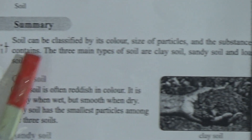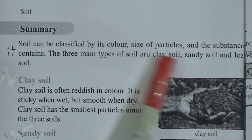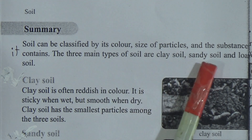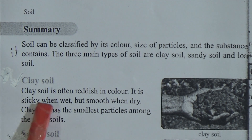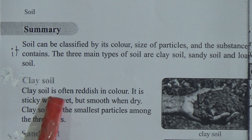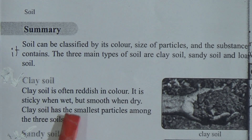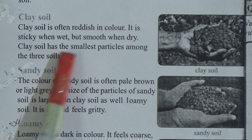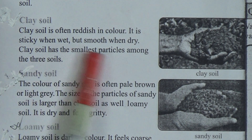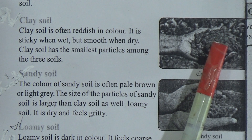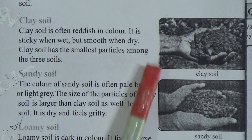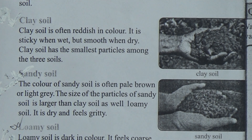Soil can be classified by its color, size of particles, and the substance it contains. The three main types of soil are clay soil, sandy soil, and loamy soil. Clay soil is often reddish in color — underline this line, this is the characteristic of clay soil. Clay soil is sticky when wet but smooth when dry. Clay soil has the smallest particles among the three types of soil.